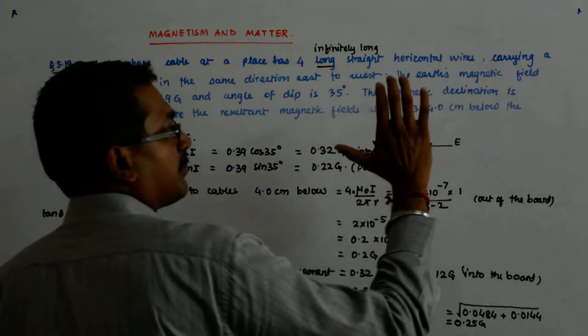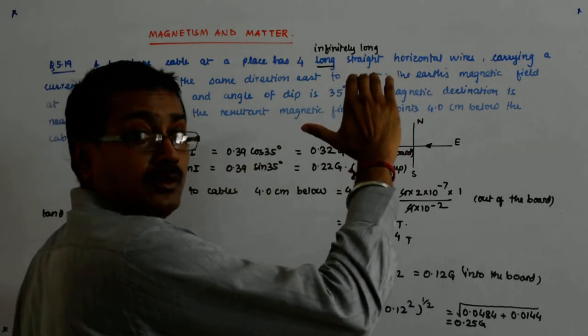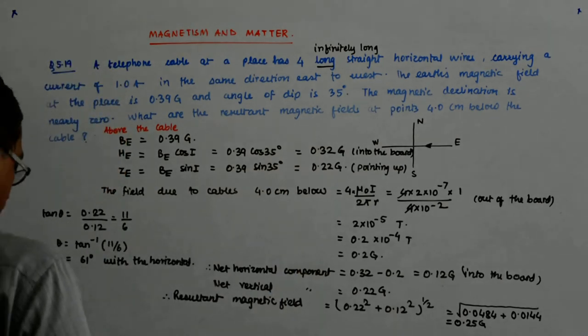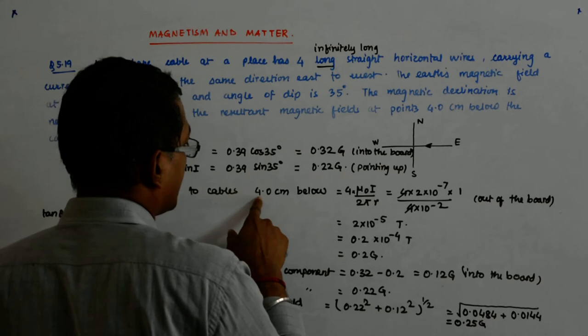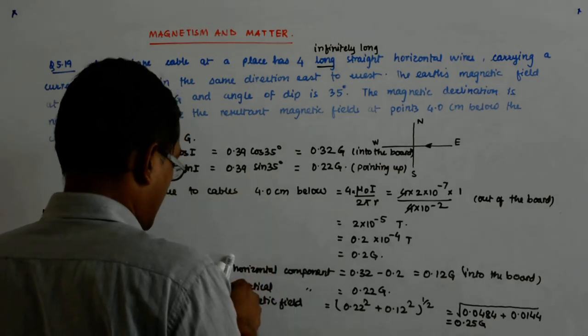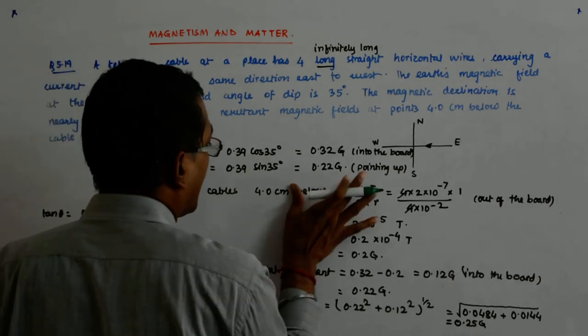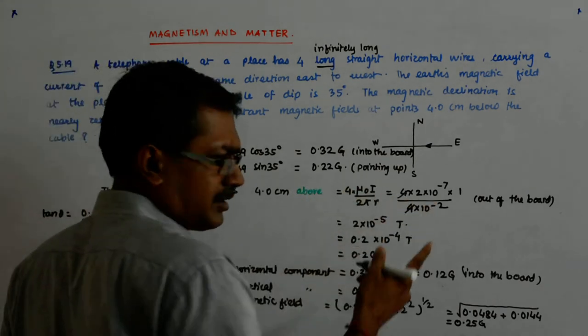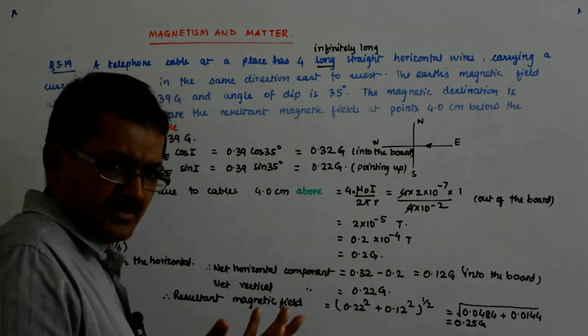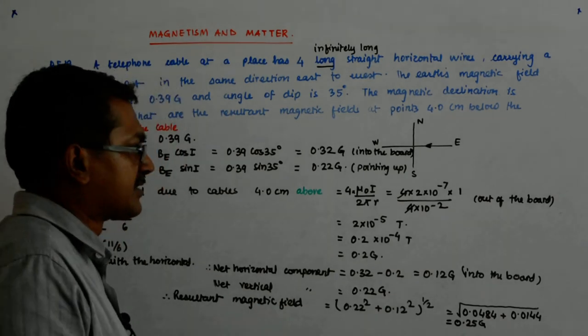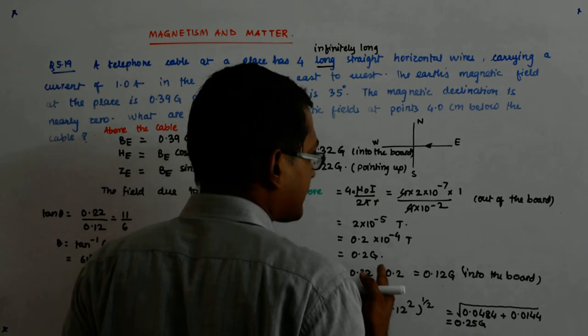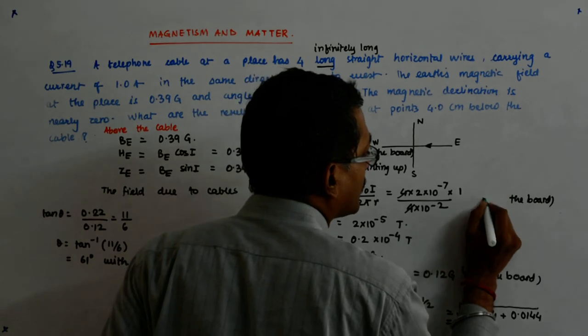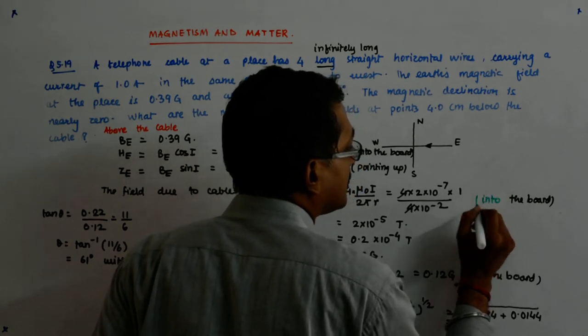Now, above the cable, by right hand rule, the field is into the board. So that is the first thing. The field due to cables 4 centimeter above is equal to, the magnitude remains the same, right? Because R remains the same and I remains the same. So everything remains the same. This becomes into the board.